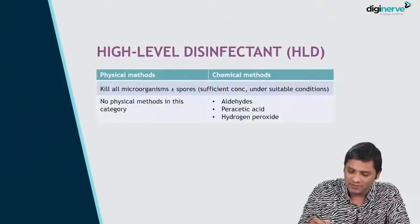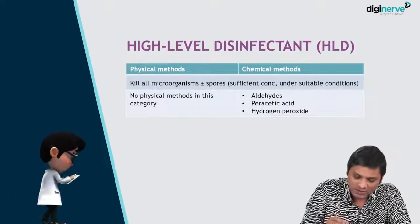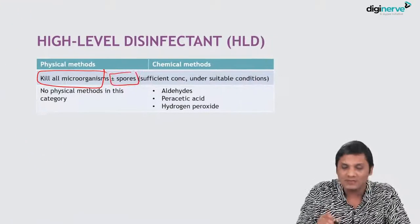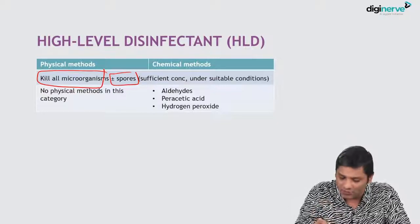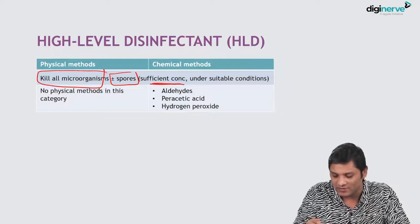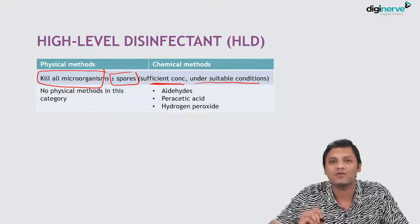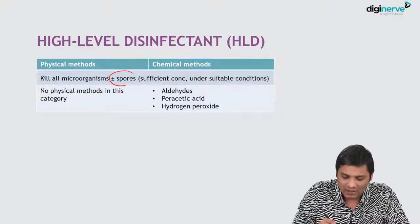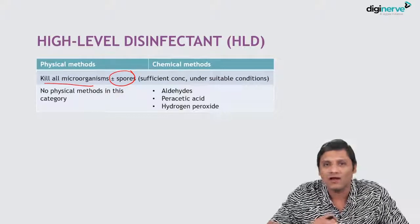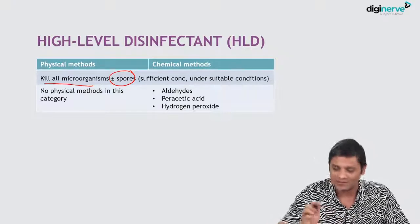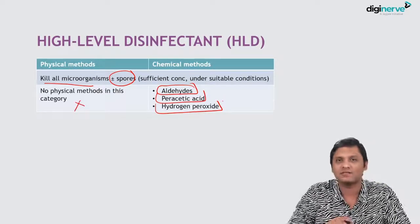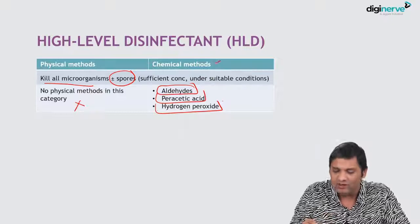Let us start the first topic, that is the high level disinfectant. High level disinfectants are those agents which will kill all microorganisms, plus or minus killing of spores. They may kill the spore if used in sufficient concentration and under suitable conditions. The various examples include aldehyde, peracetic acid, and hydrogen peroxide. There is no physical method under this category — only chemical methods.